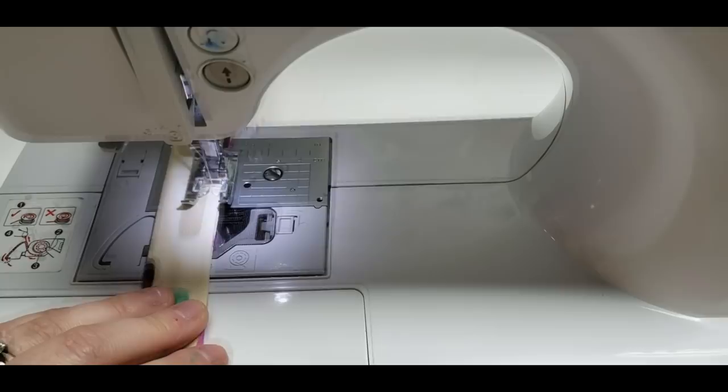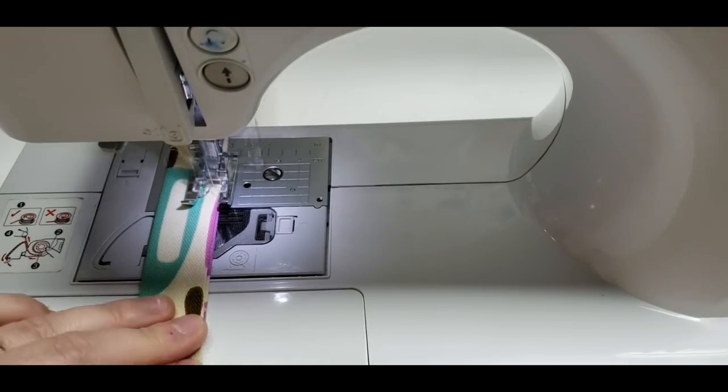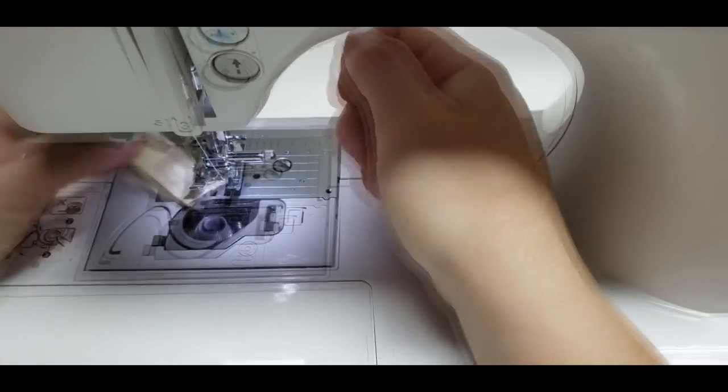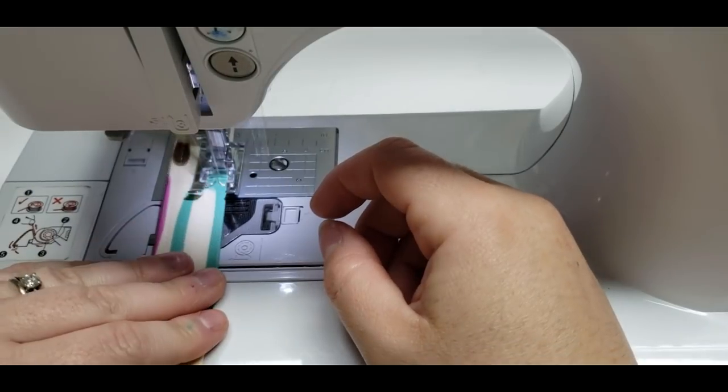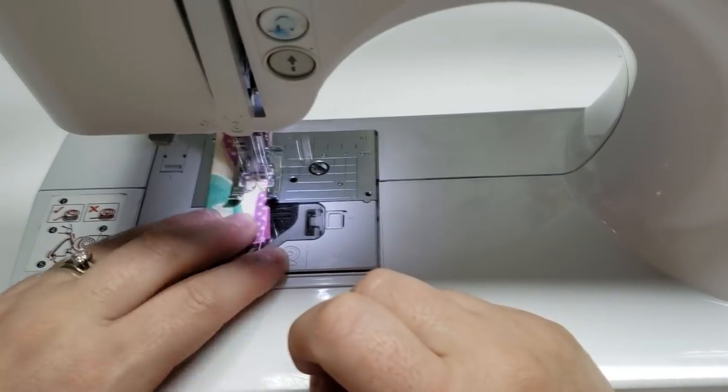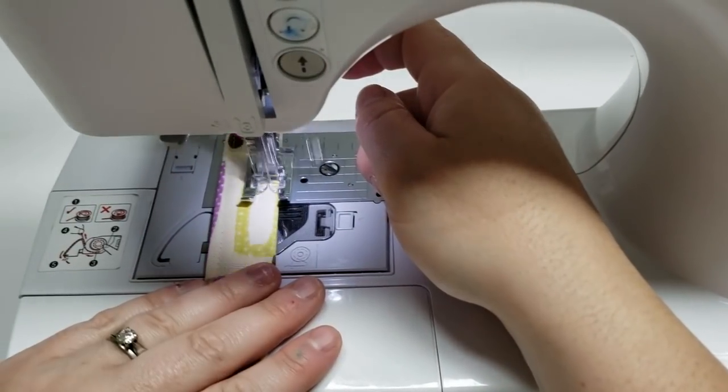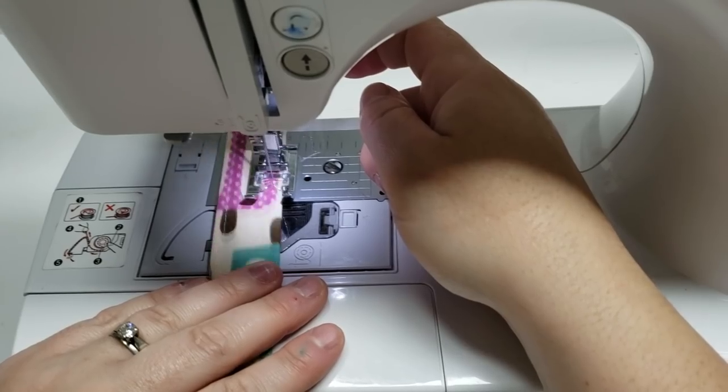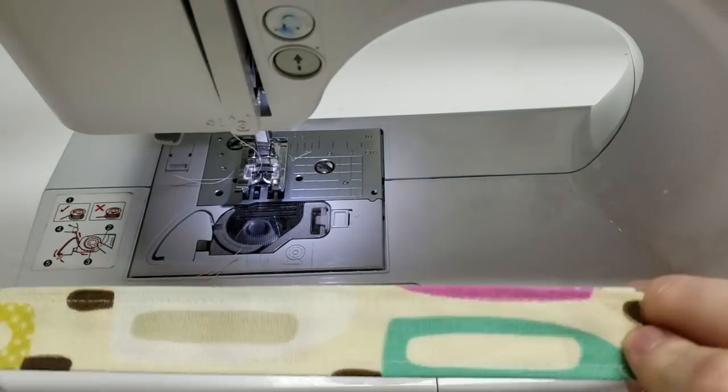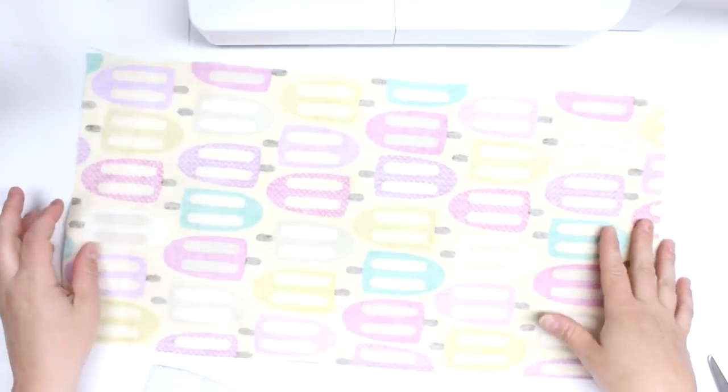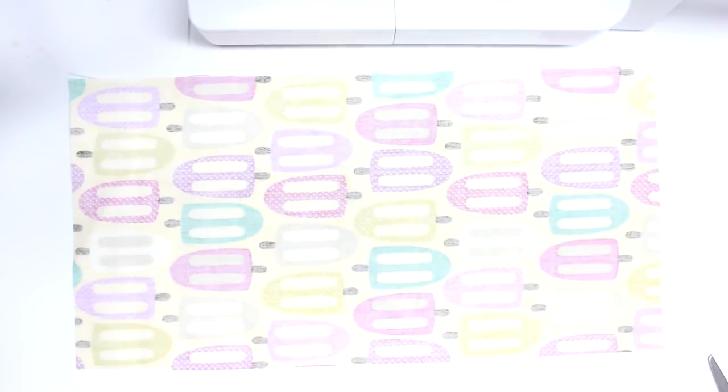Now I'm just going to sew down either side of the strap and then this will make it nice and uniform and look like a strap. I like to bump my machine up to about a three stitch length also when I do top stitching. So after that then we can start working on the actual body of the bag. We're going to take our large piece.